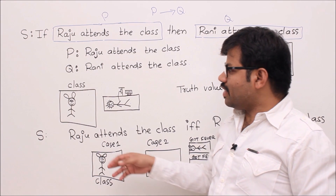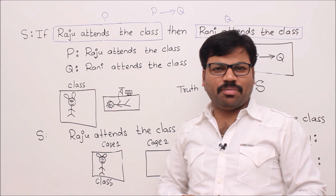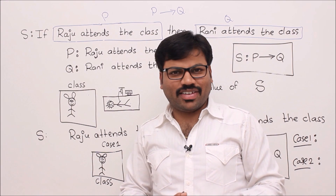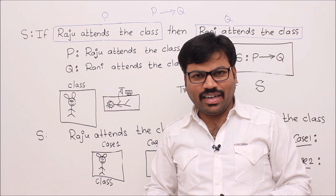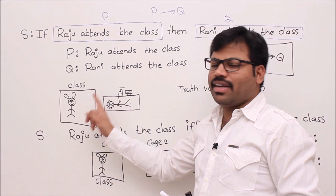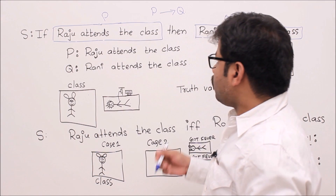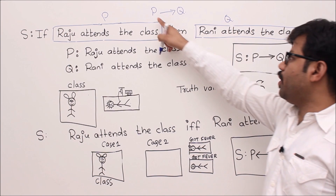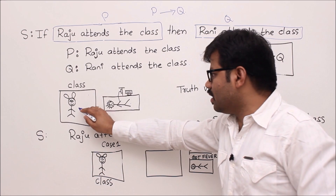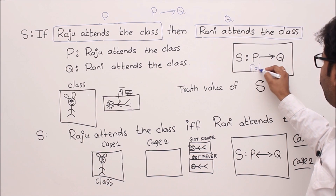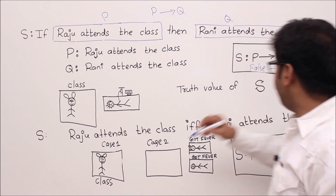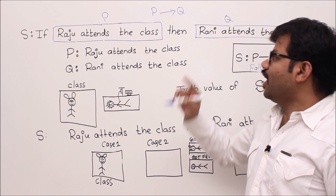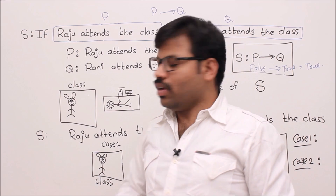Consider the situation where Rani is attending the class and Raju is on the hospital bed — he cannot go to class. So P (Raju attends the class) is false, and Q (Rani attends the class) is true. Then false→true equals true. Since the truth value is true, the statement 'If Raju attends the class, then Rani attends the class' is true in this situation.